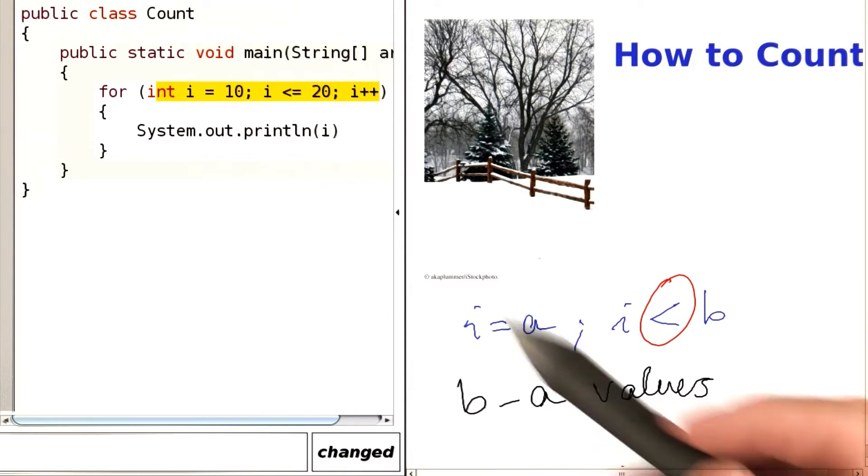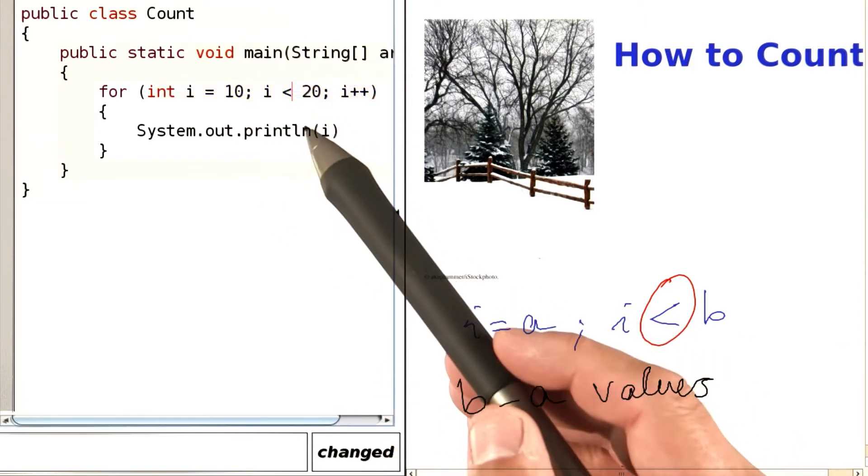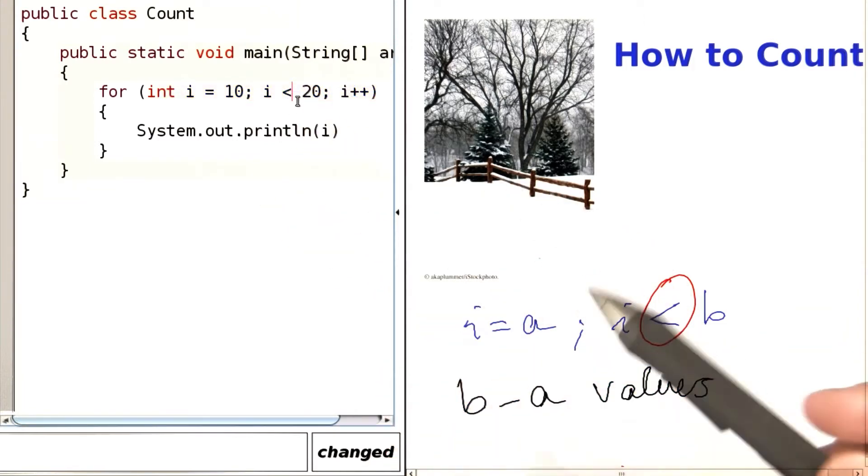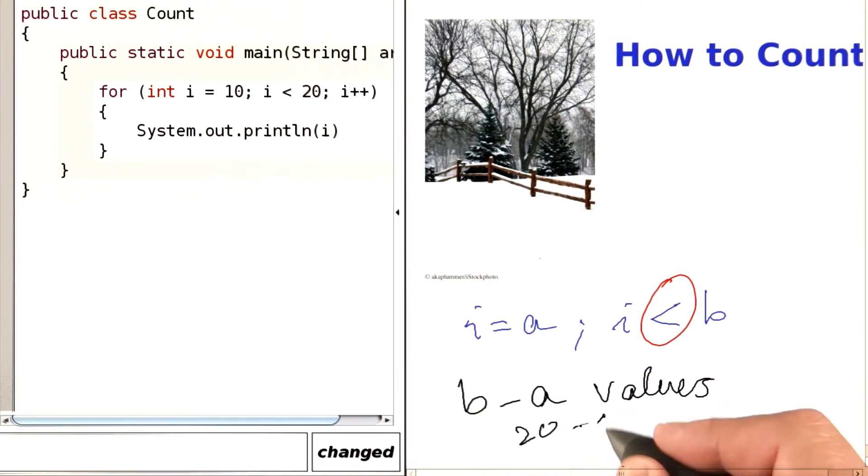For example, if over here we change the less equal to a less than sign, then we have 20 minus 10 or 10 values, namely the values 10, 11, up to 19.